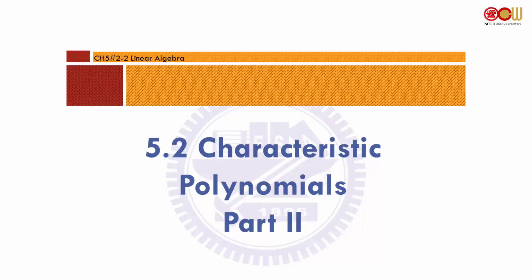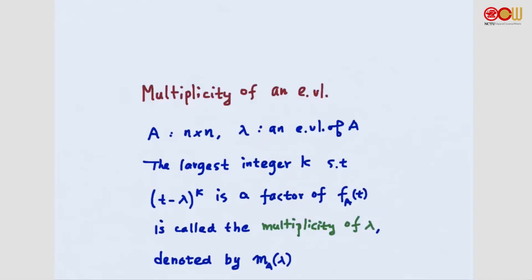In this part 2 video, we are going to look at the connection between the dimension of eigenspaces and something we call the multiplicity of an eigenvalue. Suppose we have an n by n matrix A, and lambda is an eigenvalue of A. The largest integer k such that t minus lambda raised to the power of k is a factor of the characteristic polynomial is called the multiplicity of lambda, and we use the notation m_A(lambda).